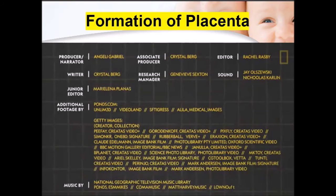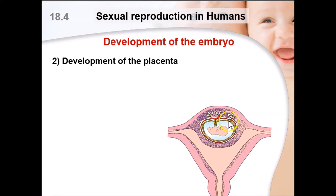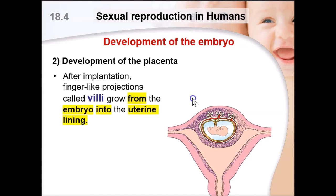That was quite an interesting video. Now let's move on to the development of the placenta and why it is such an important part of the development of the fetus. Looking at the picture in your notes, you can see a developing embryo turning into a fetus and its connection to the mother's uterine wall. This connection is the umbilical cord, and you can see three Y-shaped structures that are very much like the villi in the small intestine.